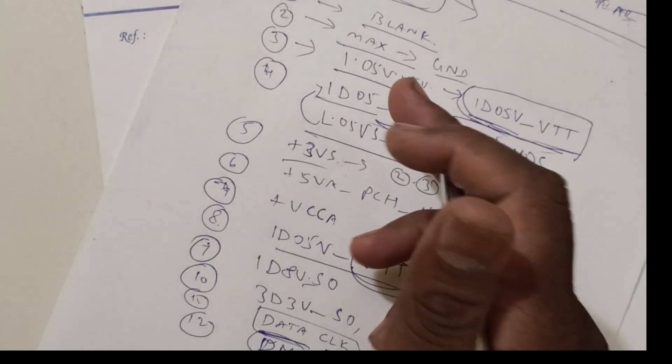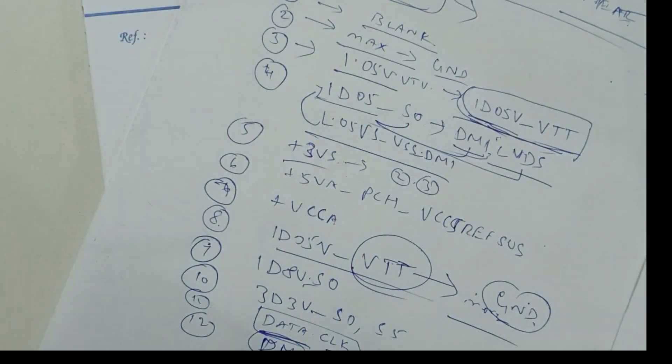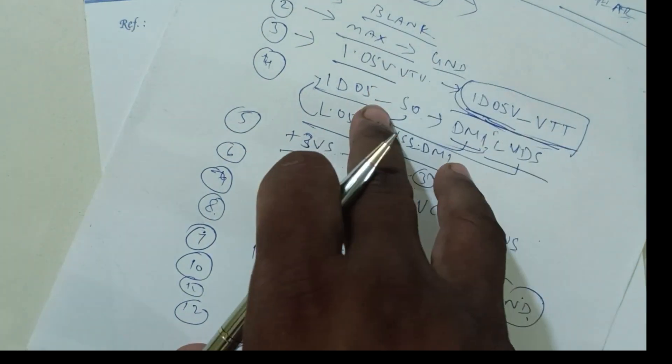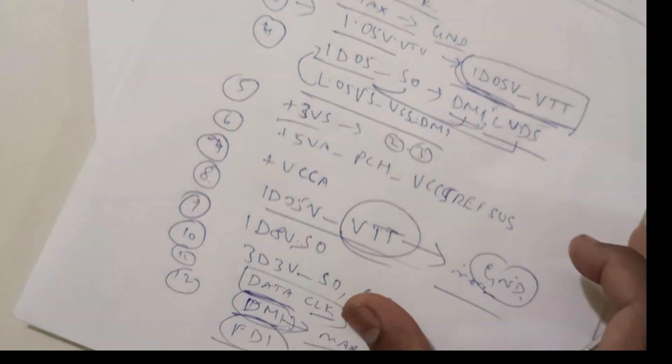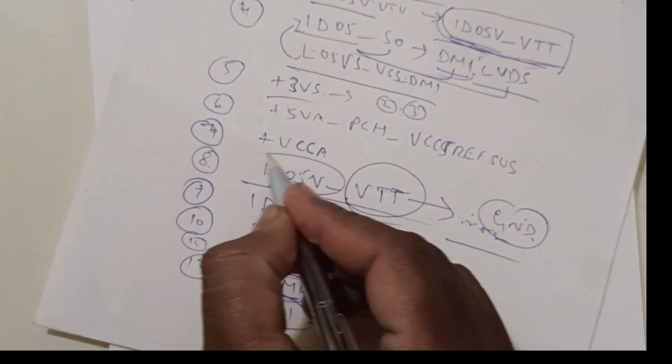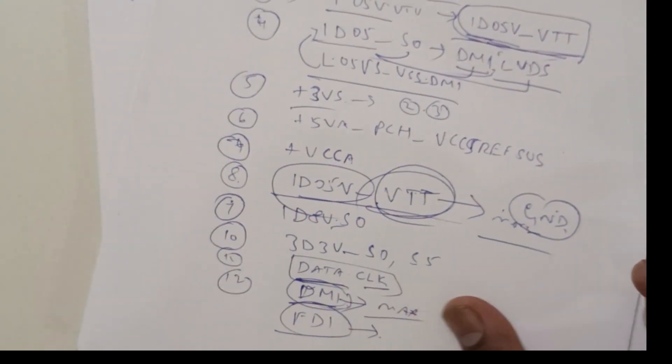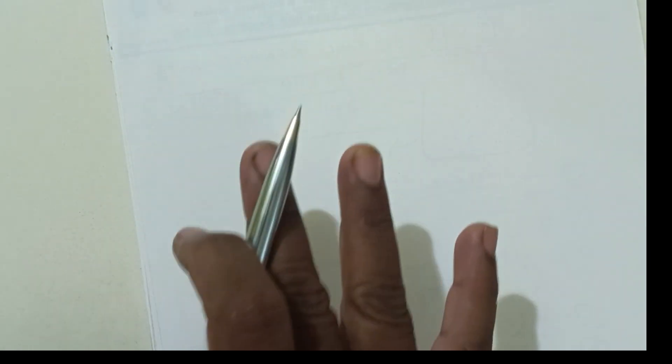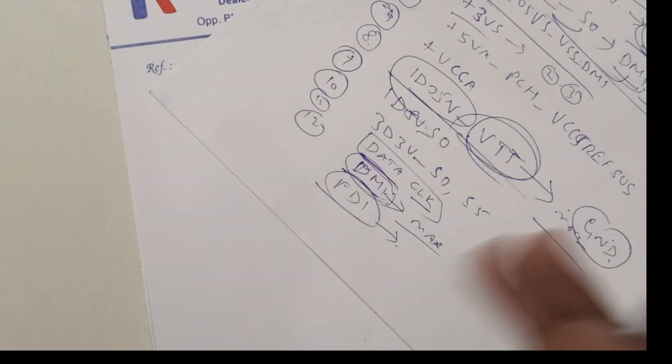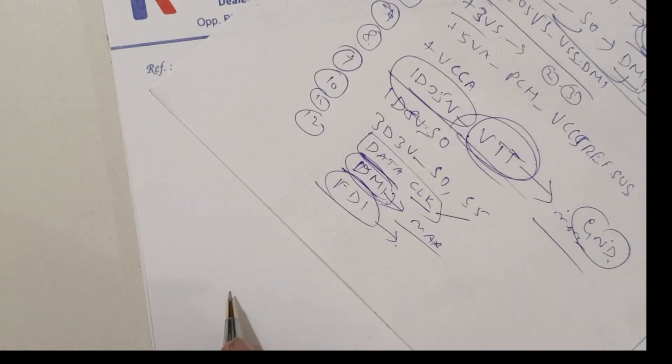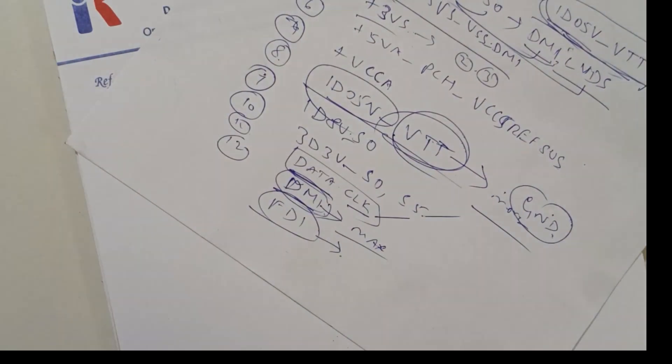These are the maximum voltages. It will take, PCH will take. Here, this is the maximum VTT voltage. And almost all ground will be there. Some more important, this is very very important data and clock, and this is also very important.